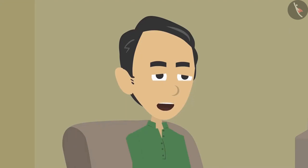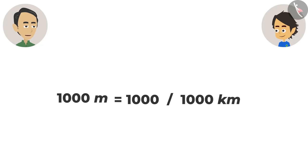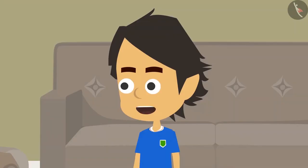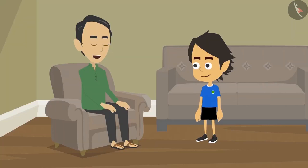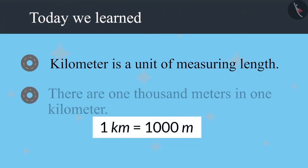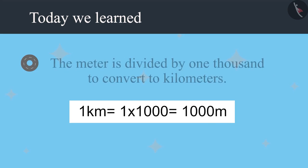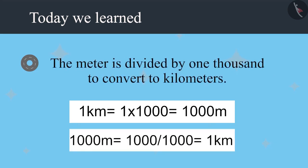Very easy. To convert meters into kilometers, divide it by 1000. For example, if 1000 meters is to be converted into kilometers, divide by 1000 — the answer will be 1 kilometer. Got it. Now check on the internet what all is worth visiting in Nainital and start planning. Today we learned that the kilometer is a unit of length measurement. There are 1000 meters in a kilometer. Multiply by 1000 to convert kilometers into meters, and divide by 1000 to convert meters into kilometers.